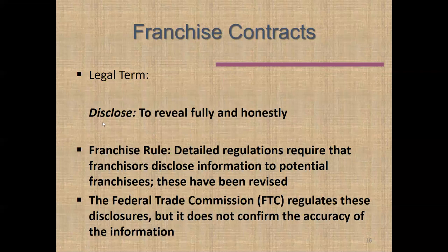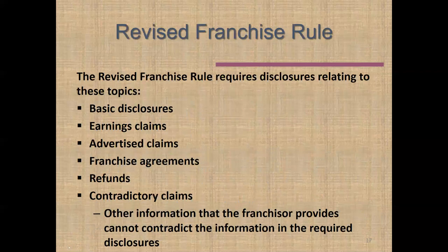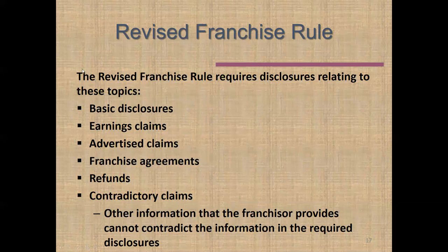It could also be that the franchisor doesn't want to reveal information because competitors might take advantage of it. Without the franchise rule, franchisees might not be able to get all the information they need to make an informed and wise decision. The revised franchise rule increased the amount of information franchisors had to reveal — information about earnings, advertised claims, the contents of the franchise agreement, and the potential of refunds. You don't need to know all the ins and outs; what's important is that it requires more disclosure than was previously required by the FTC.